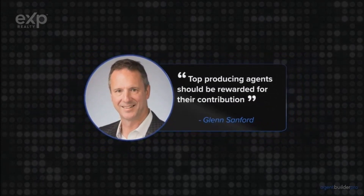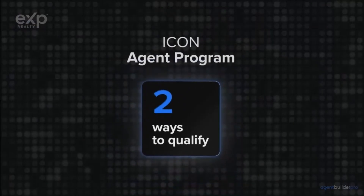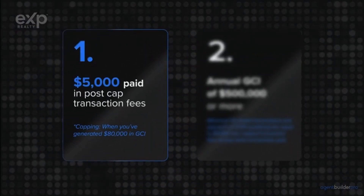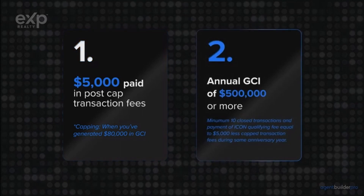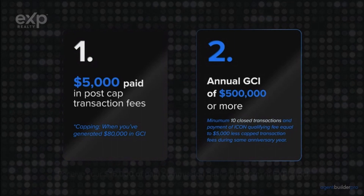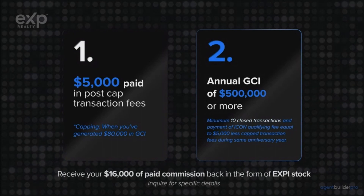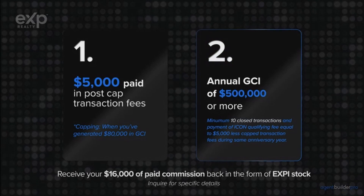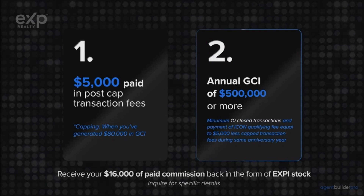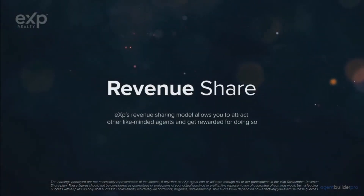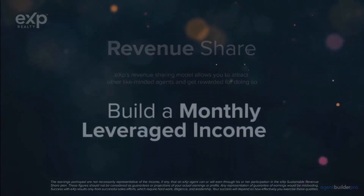eXp's ICON Agent Program is unmatched within the industry. Our founder Glenn Sanford strongly believes that top producing agents should be rewarded for their contribution. There are two ways to qualify for ICON status: $5,000 paid in post-cap transaction fees, or $500,000 annual GCI with a minimum of 10 closed transactions. When you achieve ICON status, you'll receive 100% of your cap that you paid to eXp back in the form of company stock, essentially putting you at a 100% commission split.